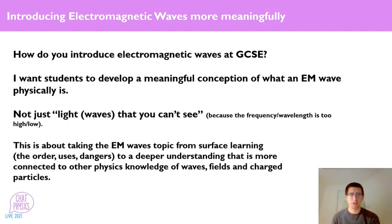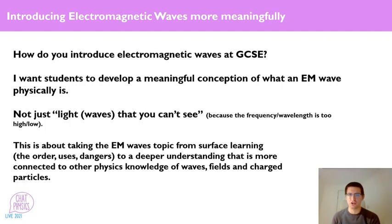I realized a few years ago that I wanted to make my teaching of electromagnetic waves more meaningful. I wanted to give students a more meaningful conception of what an electromagnetic wave physically is, beyond just light waves you can't see because the frequency or wavelength is too high or too low. My concern was that my teaching was a bit surface — students would learn the order, the uses, the dangers of each type of radiation, but did they actually know what a radio wave was in any sense? I wanted to give them that deeper understanding, more connected to the other areas of physics knowledge.